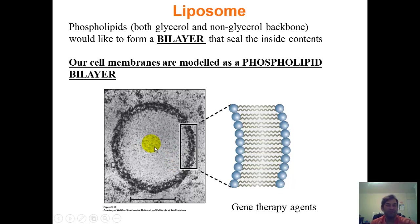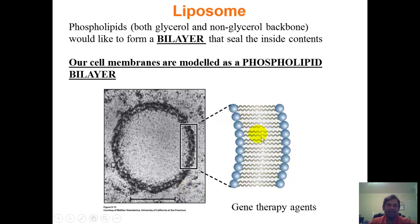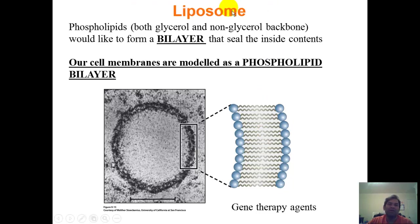Inside that enclosed space, we can put genes in for gene therapy or even proteins for protein therapy. This is really a non-biological term — what I want you to know is the phospholipid bilayer. But if you want to use it in a lab for packaging, drug delivery, or delivery to a target, we call that a liposome. It's composed of phospholipids self-assembling into a circular-like structure.